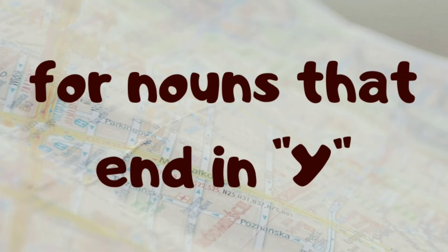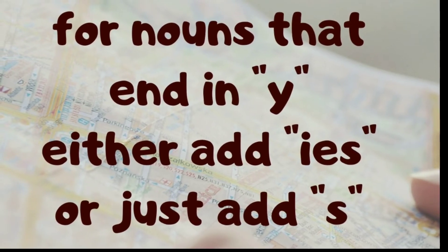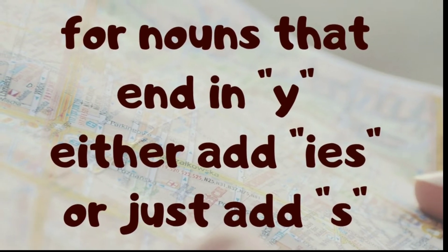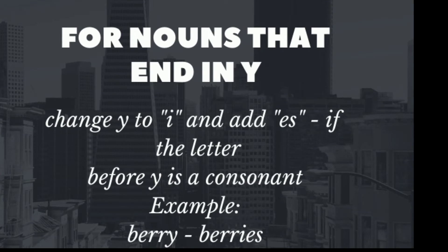For nouns that end in Y: if the letter before Y is a consonant, we drop Y and add IES — for example, 'berry' becomes 'berries' (consonant + Y → IES).